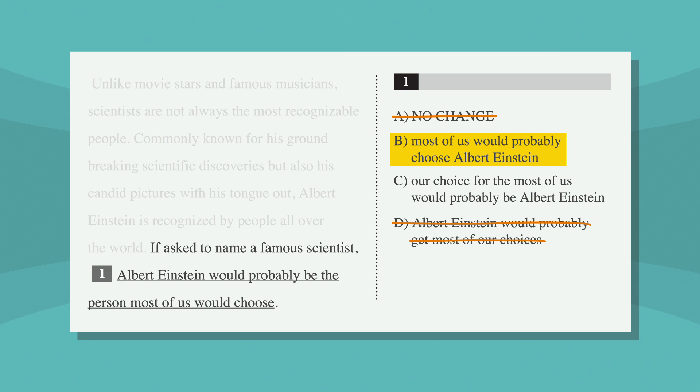We're left with answer choices B and C. Answer choice B sounds pretty good: 'If asked to name a famous scientist, most of us would probably choose Albert Einstein.' The modifier is modifying the right thing. But let's look at C: 'If asked to name a famous scientist, our choice for the most of us would probably be Albert Einstein.' That sounds wordy, awkward, and convoluted — definitely not right. So answer choice B it is. Nice work.